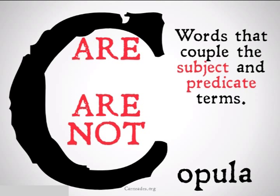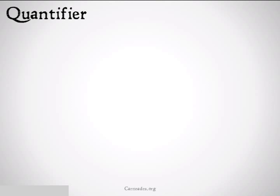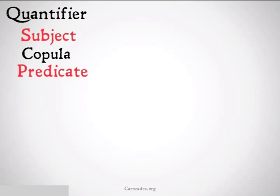If those are a little confusing, let's take a look at some examples. In any categorical proposition, you have four parts: a quantifier, a subject, a copula, and a predicate. They're not necessarily all a single word, but you have four different parts.